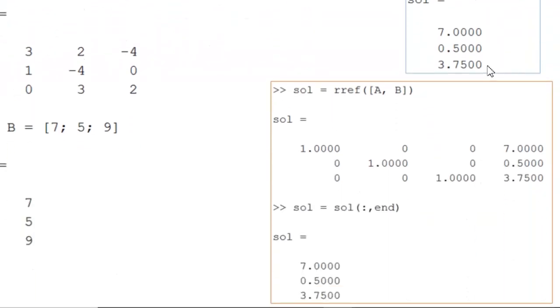Alternatively, the rref command is shown here. A and B are concatenated into the augmented matrix, and the rref command is used. This full matrix is produced, but we only care about the last column. So, with this final command, we see the same solutions as before.